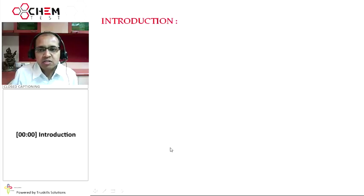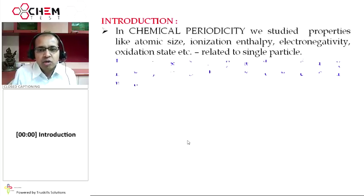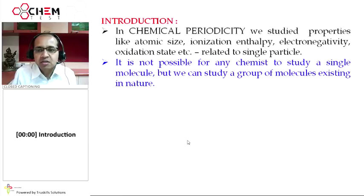In chemical periodicity, we studied properties like atomic size, ionization enthalpy, electronegativity, and oxidation state. These are properties related to single particles. But it is not possible for any chemist to study a single molecule. We can always study a group of molecules existing in nature.